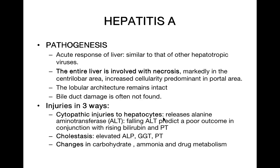If ALT was 1000 international units per liter two days ago and has now fallen drastically to 50, that is not a good sign — it shows severe necrosis of the liver and indicates poor prognosis. This always occurs alongside rising bilirubin. In severe necrosis, bilirubin rises consistently while ALT falls rapidly.